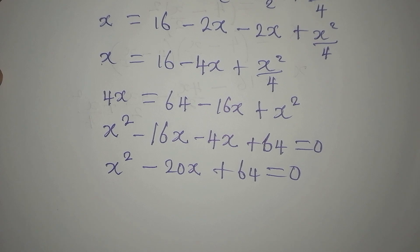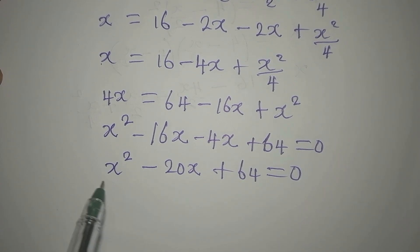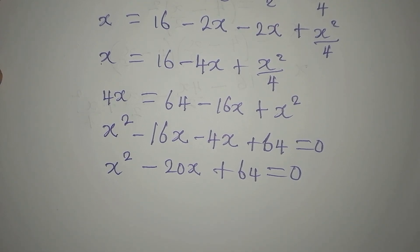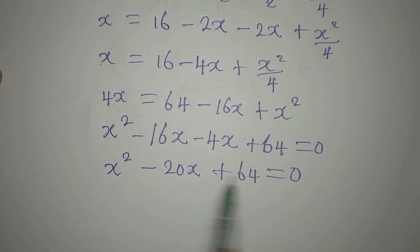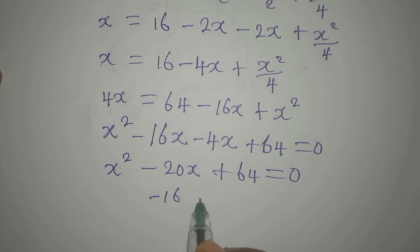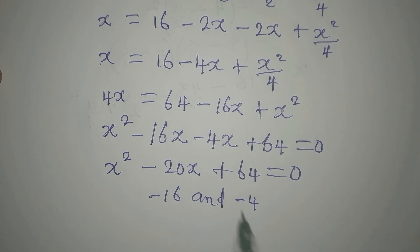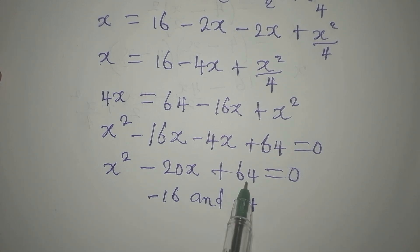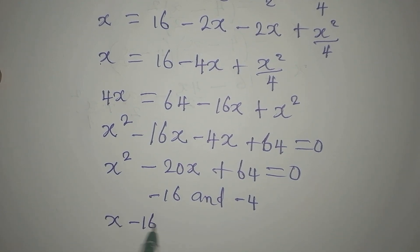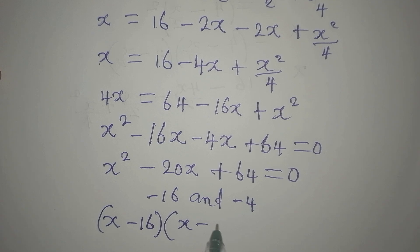To solve the quadratic, we look for two numbers that multiply to give 64 and add to give -20. Those numbers are -16 and -4: (-16) + (-4) = -20, and (-16) × (-4) = +64. So the factors are (x - 16)(x - 4).